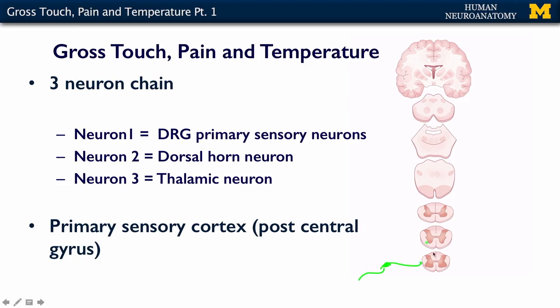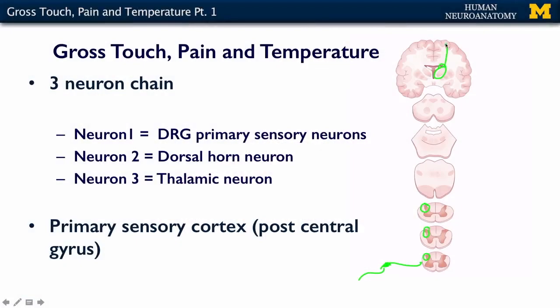Neuron two lives in the dorsal horn of the appropriate spinal level. Neuron three lives all the way up in the central nervous system, in the thalamus. We'll talk a lot about the thalamus later when we discuss the cortex and the rest of the brain. For now, it's one of the relays for sensory information coming in from the periphery. The thalamus then projects to the primary somatosensory cortex — the postcentral gyrus.